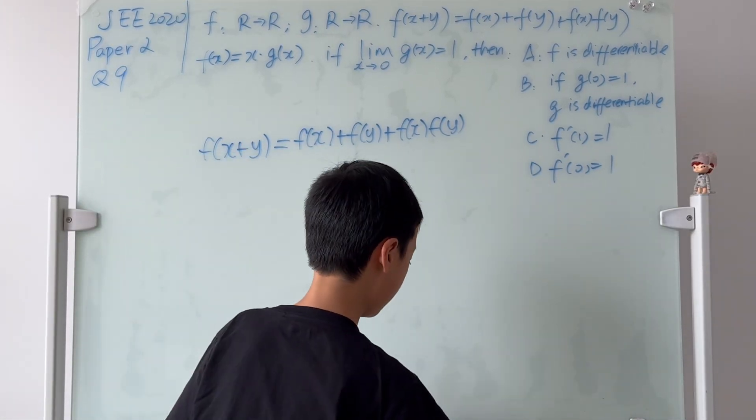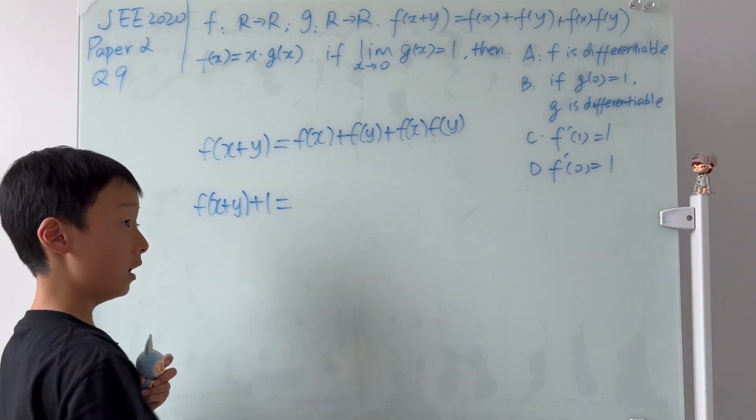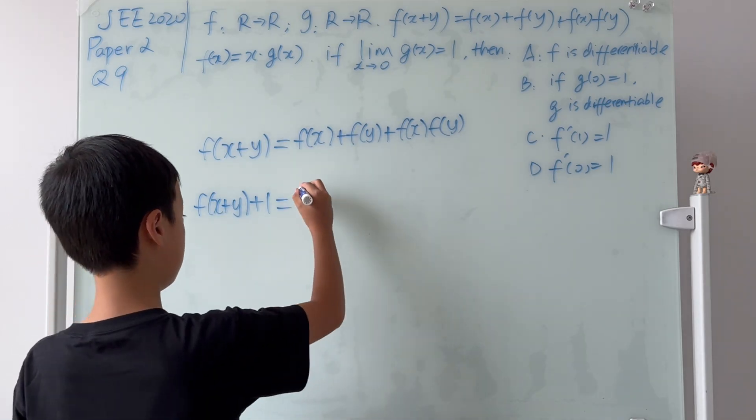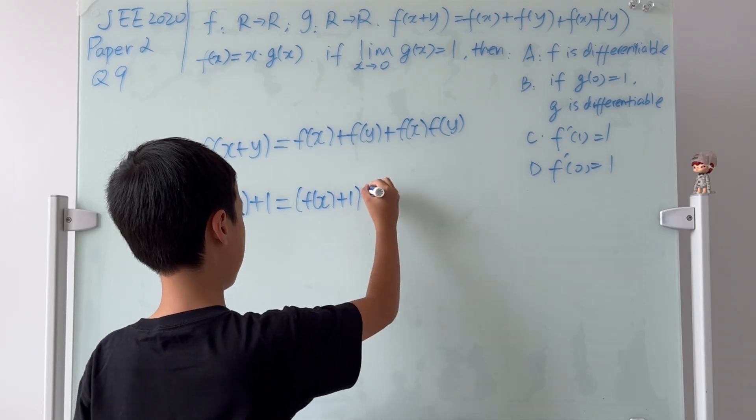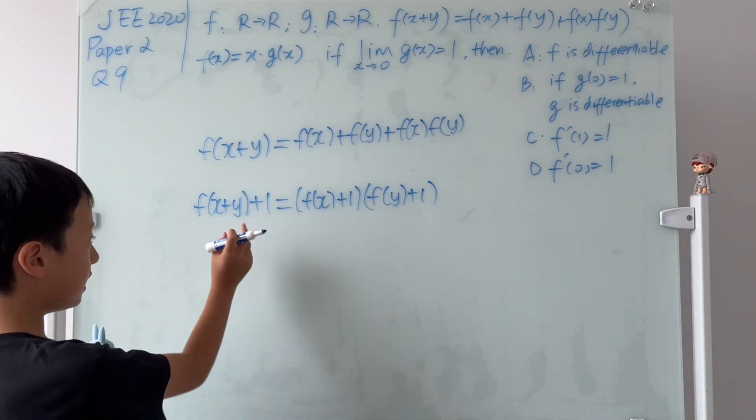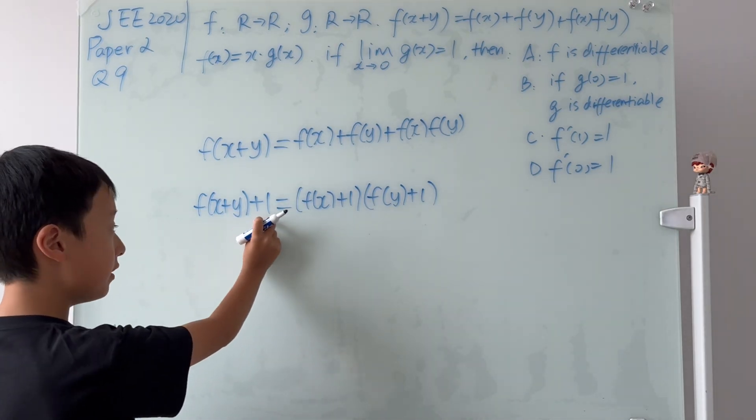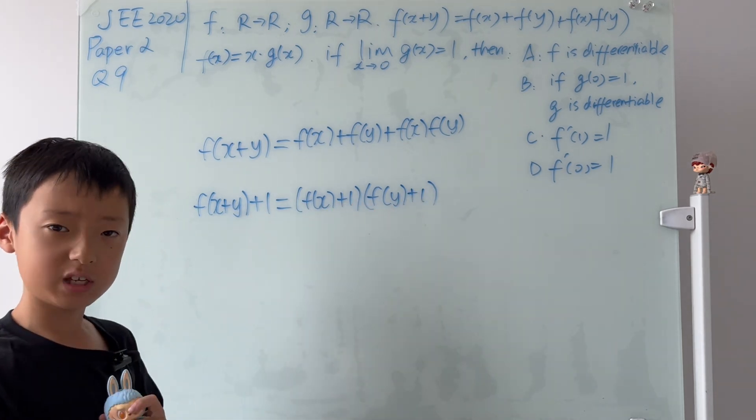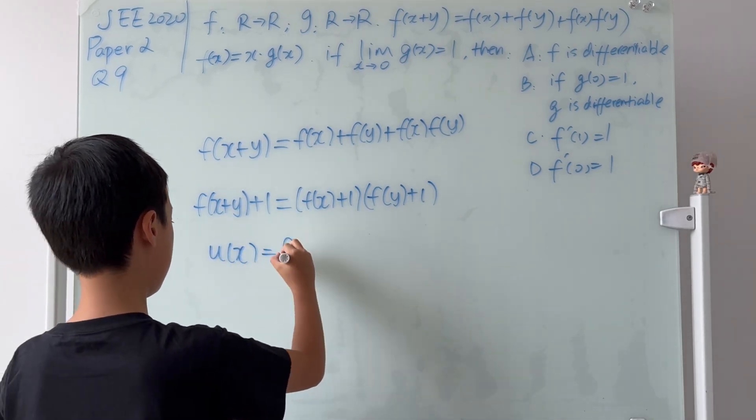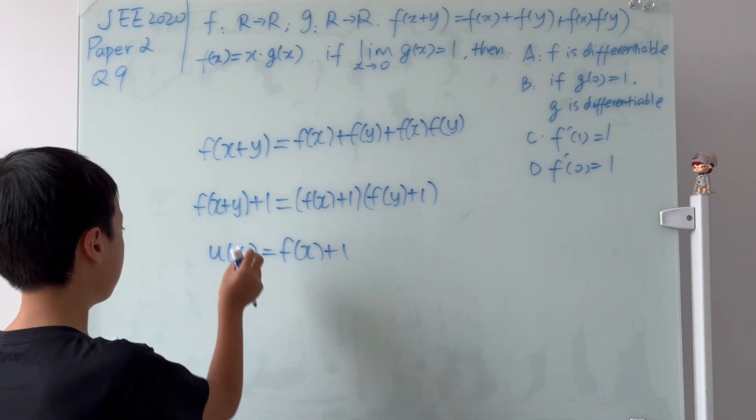So if we add a 1 on both sides, then we know that f(x+y) + 1 is equal to (a+1) times (b+1), which is equal to (f(x)+1) multiplied by (f(y)+1). Now let's look at the left hand side and the right hand side. They have the same form, right? A function added with 1. So this calls for some sort of substitution. So why don't we let u(x) equal to f(x) + 1.